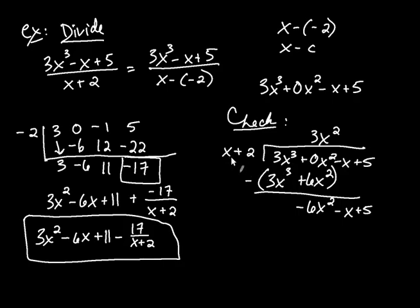And then what times x gives negative 6x squared? That's going to be negative 6x. Take that and distribute it. So it's going to be negative 6x squared minus 12x. Put parentheses on that. Subtract off the whole thing, just like before. So we're going to get, these are going to cancel, but this is going to be a positive 12x. Take away x is going to be 11x plus 5. And then I'm going to need an x times 11, so a positive 11 here.